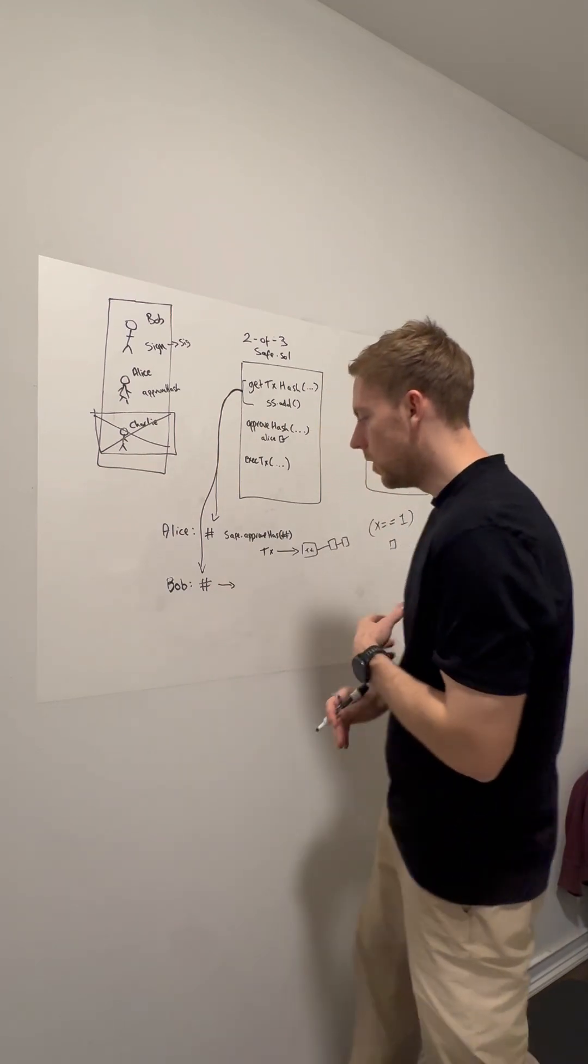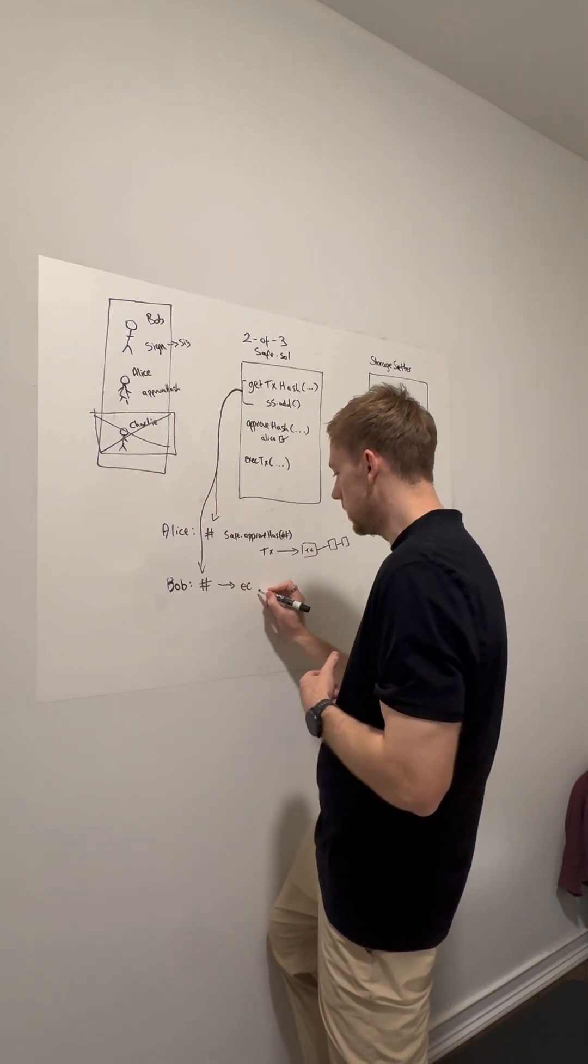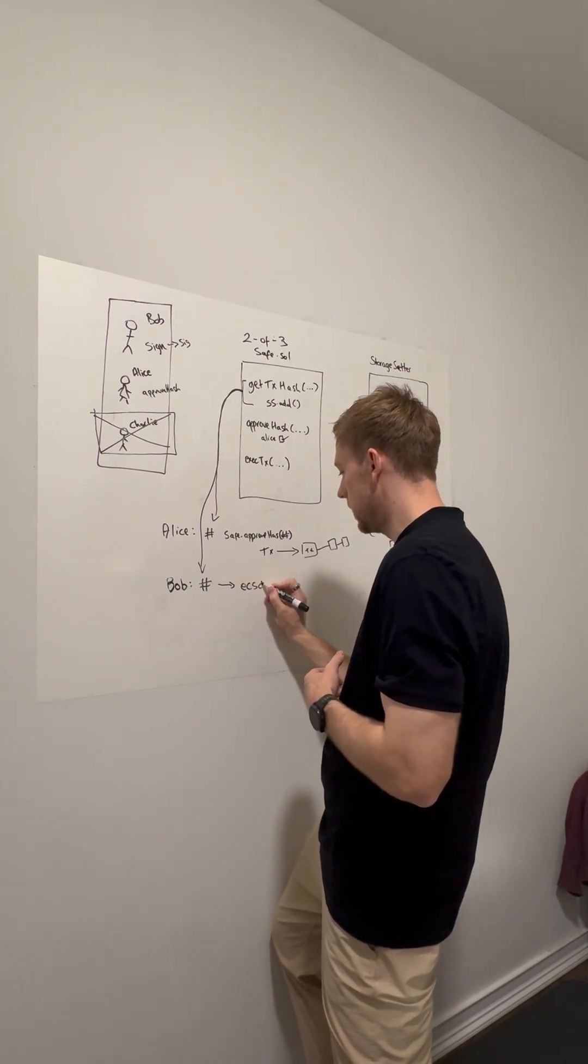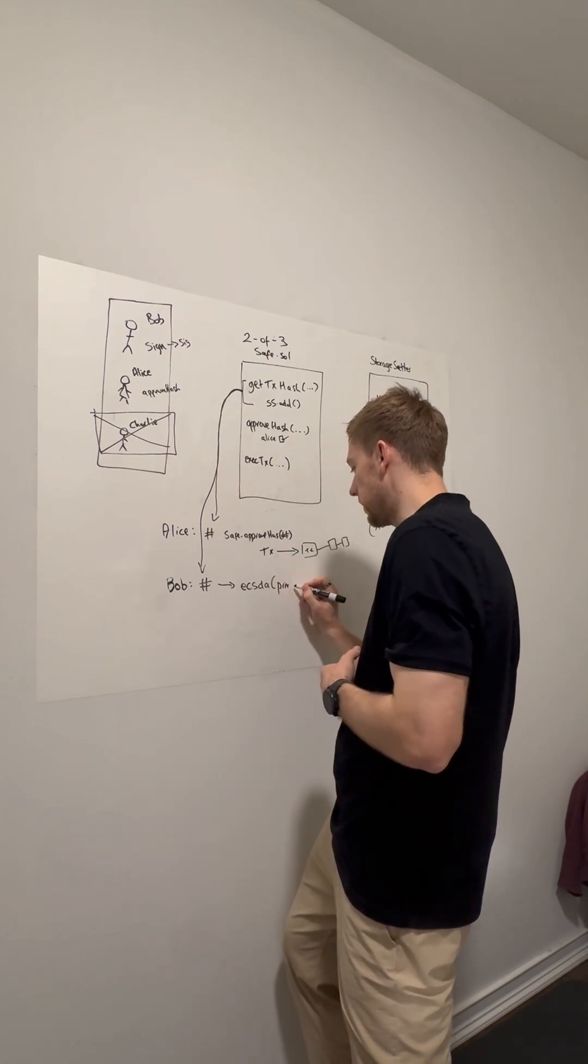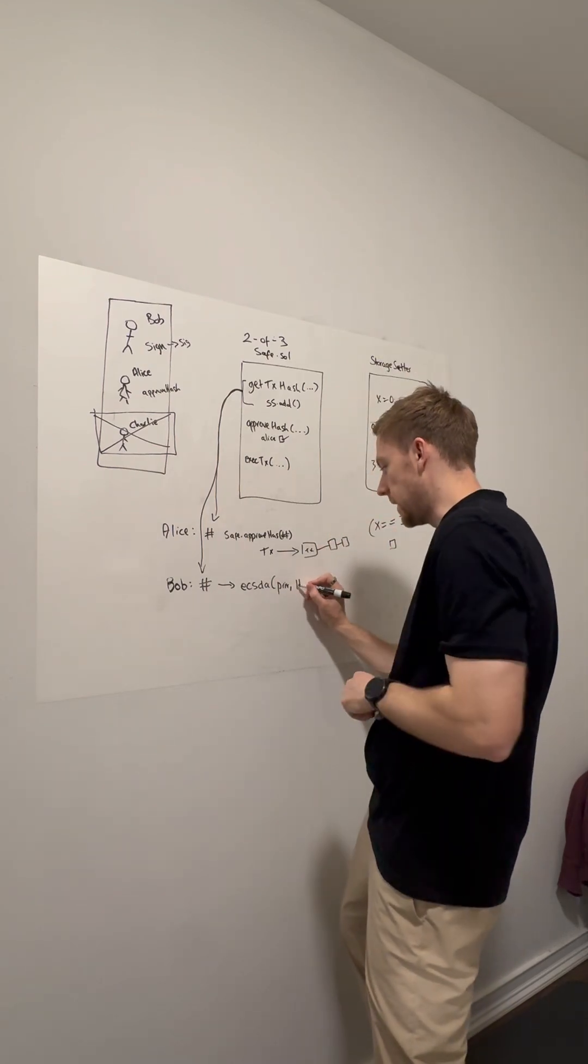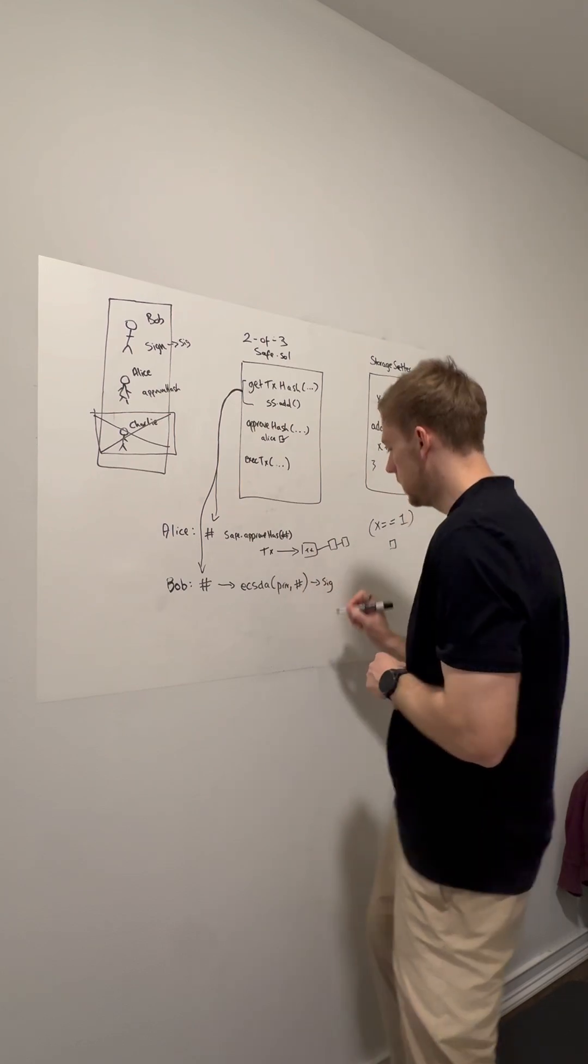and he has an offline private key. He's going to use elliptic curve signing with his private key. He signs the hash, which gets him a signature.